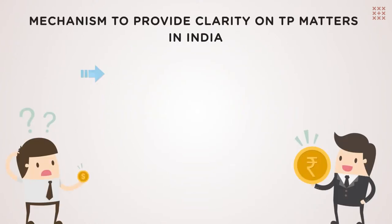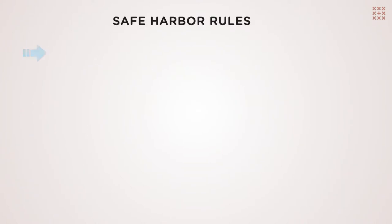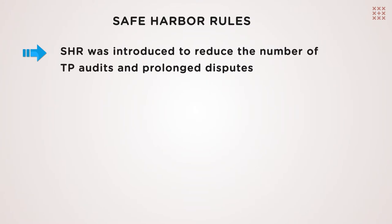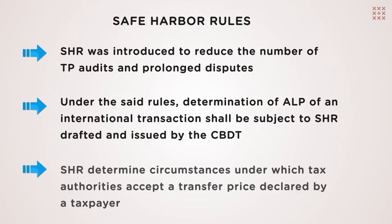The two mechanisms which provide clarity on TP matters in India are Safe Harbor Rules and Advanced Pricing Agreements. Safe Harbor Rules were introduced to reduce the number of TP audits and prolonged disputes. Under the said rules, the determination of ALP, otherwise known as the arm's-length price of an international transaction, shall be subject to ASHR, drafted and issued by the CBDT, which is the Central Board of Direct Taxation. ASHR determines circumstances under which tax authorities accept a transfer price declared by a taxpayer.